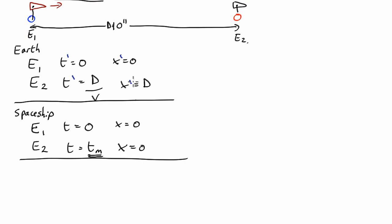In that case, the Lorentz transform tells us that t' = γ(t + vx/c²). So at the start, Event 1, t' should be 0 = γ(t) - t is 0 - plus vx over c² - x is 0 - it's 0 = 0. So good.